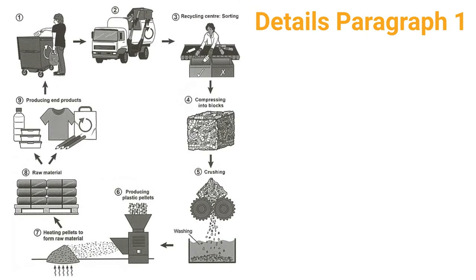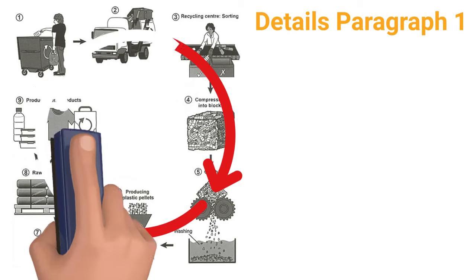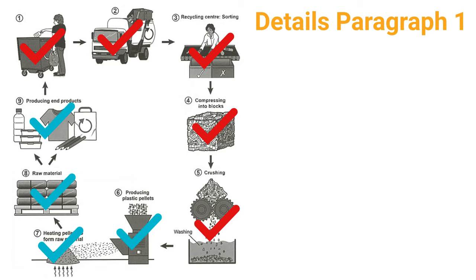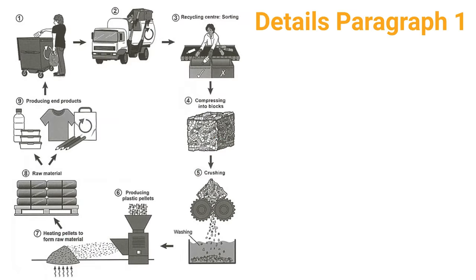Now let's move on to the two details paragraphs. Just like what we did in the overview paragraph, we also need to describe a complete cycle in our details paragraphs. How should we group all these steps into the two details paragraphs? I would group the first five steps into the first details paragraph and the last four steps into the second details paragraph, because these last four steps are all about using plastic pellets to make plastic products.